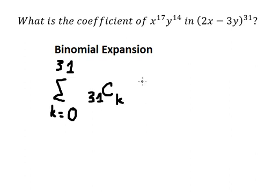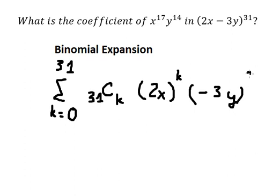We have 2x to the power of k, multiplied by negative 3y to the power of 31 minus k.